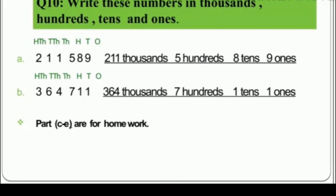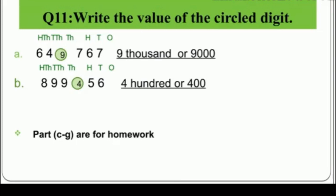Question 11: write the value of the circled digit. Part A: 649760 — the circled digit is 9, whose place value is thousands. There are two ways to write this. First way: write the digit and its place value in words — '9 thousand' (T-H-O-U-S-A-N-D). Second way: write in digits — 9 followed by three zeros gives 9000. Both forms are acceptable.